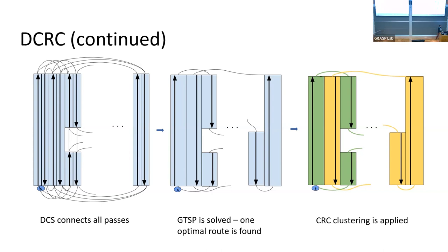The clustering formula defines the cost of each cluster, L_j, taking into account both traversal cost — traveling from start to where coverage begins — and the coverage cost of the cluster itself. We estimate this using the maximum distance a robot must travel to reach the farthest cluster plus the size of the single route for covering that area, plus the return cost. This ensures each robot has an equal amount of work to perform.